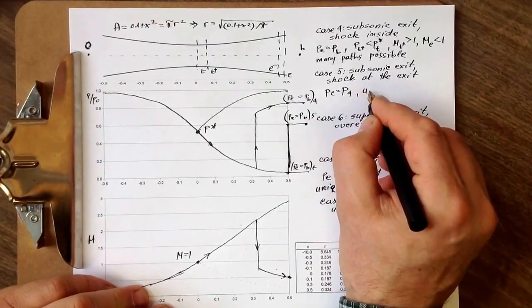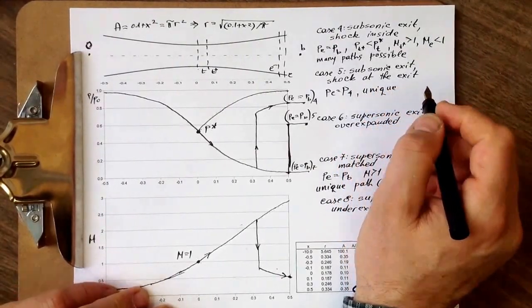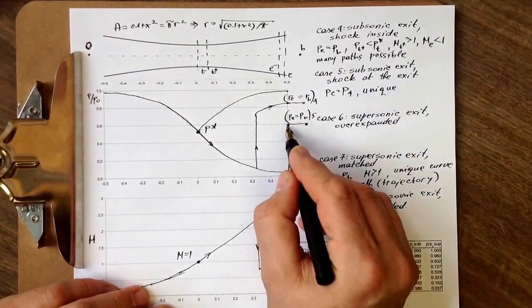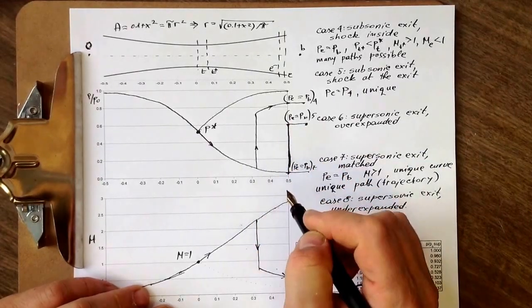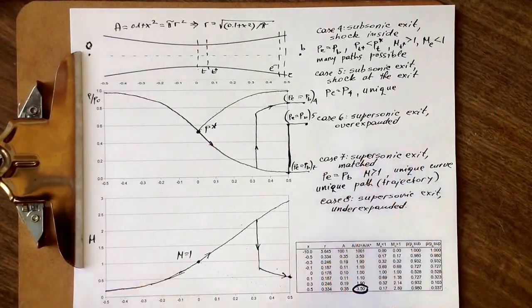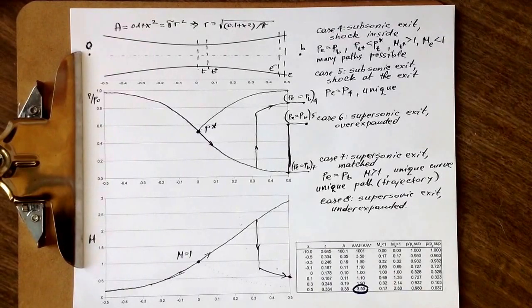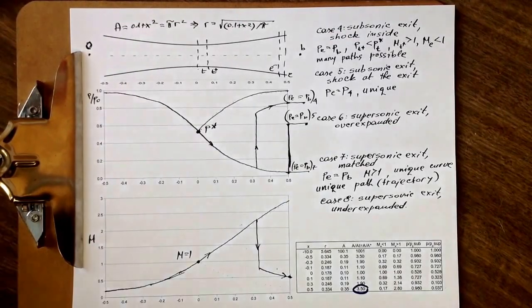We still have Pe equals P4. This is also a unique pattern. There can be only one solution where the shock is exactly at the end. So, that's the end of this part, and we'll move on to the remaining two cases in the next segment.